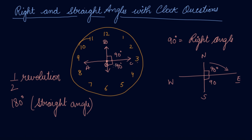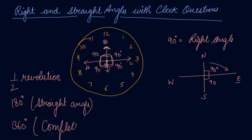Now if the hand moves from 180 degrees further, it makes another 90 degrees — so 90 plus 90 plus 90 is 270 degrees. After that it goes back to 12, completing a full revolution with a complete angle of 360 degrees, which is known as a complete angle.